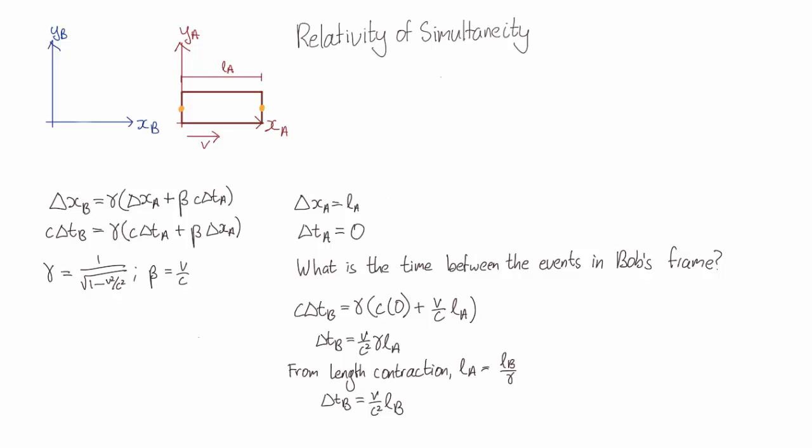The other thing it depends on is the spacing between these two events. So if the events happen further and further apart, they are less and less simultaneous in Bob's frame.